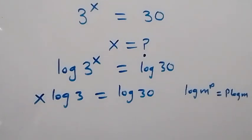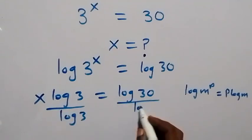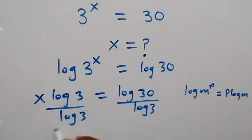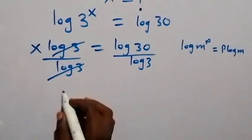And log 3 here divided by log 3, and we divide this side too by log 3, such that this will cancel out. We have x left here,